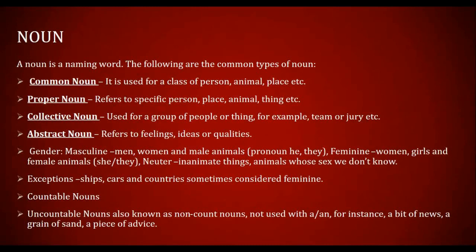A collective noun is used for a group of people or things — for example, 'a team of players,' 'a swarm of bees,' 'a pile,' 'a class of something.' There are lists of collective nouns you can find by searching online. Now, an abstract noun refers to feelings, ideas, or qualities — something you cannot physically touch. This is why we say a noun is simply a naming word, because it can name feelings and ideas, not just persons or places.